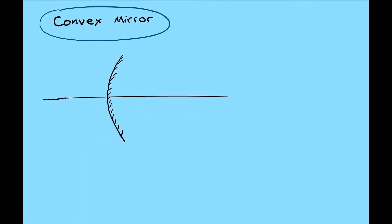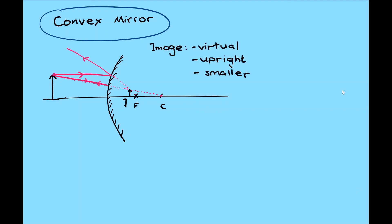Let's have a look at the image formed from a convex mirror. Draw the principal axis with the corresponding center point and focal point — note that these points are located behind the mirror. The first ray from the top of the object travels parallel to the principal axis and reflects away as if originating from the focal point. The second ray travels toward the center point and reflects back upon touching the mirror surface. Extending the diverging rays behind the mirror, we find the image forms at their intersection behind the mirror. For a convex mirror, the formed image is always virtual, upright, and smaller than the object.